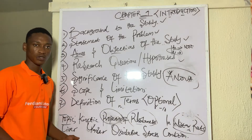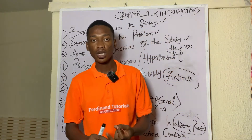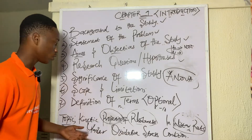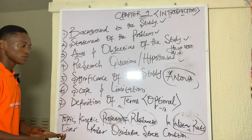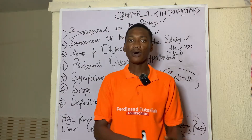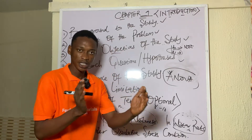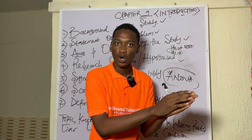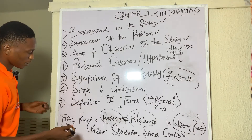For scope and limitations, we look at what the project covers — the number and kind of species used, the assay method, the sample size, and the age bracket. For example, I can say the study is limited to male Wistar rats aged 8 to 10 weeks, and only the liver is considered — not any other organ like the kidney or lungs. This defines the scope and limitation of the study.